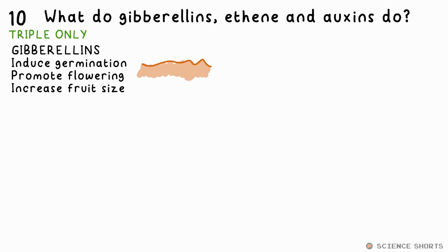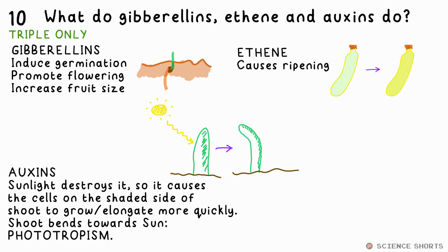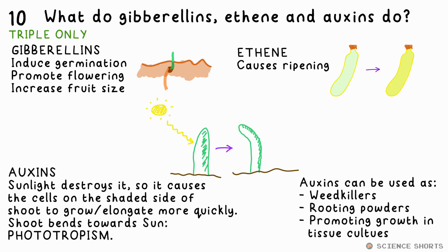Gibberellins induce germination, promote flowering, and increase fruit size. Ethene promotes the ripening of fruit. Auxins are growth hormones in plants — in shoots, they promote growth and elongation of cells. Sunlight destroys auxin, causing the shaded side to grow faster, which makes the plant point towards the sun. This is called phototropism. Auxins can also be used as weed killers and rooting powders.